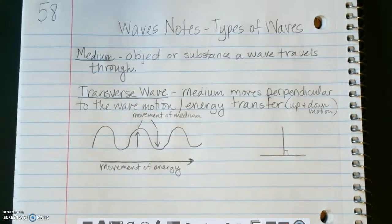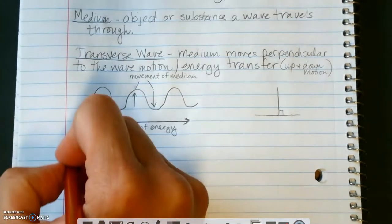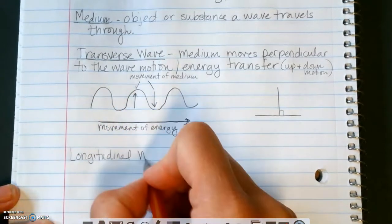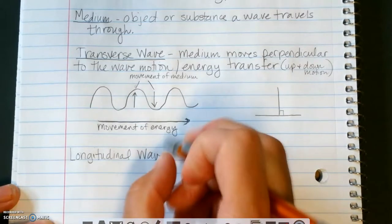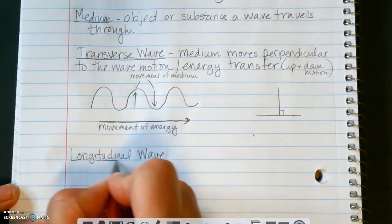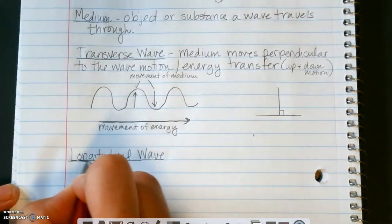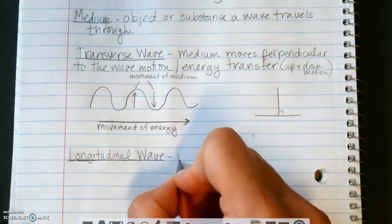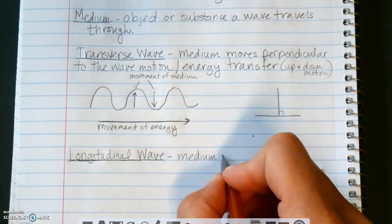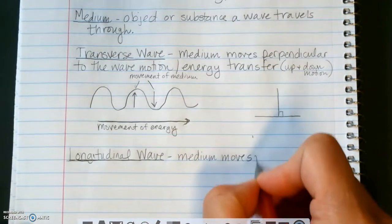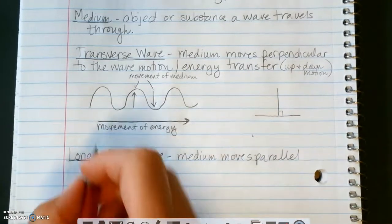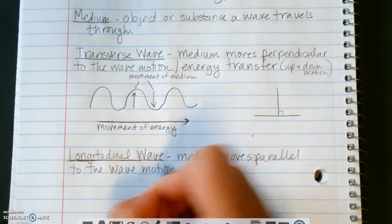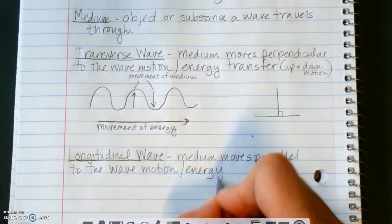The second one is called a longitudinal wave. So you did see this in the gizmo as well. So longitudinal wave. They use a slinky again to make the best version of a longitudinal wave. And that is where the medium moves parallel to the wave motion slash energy transfer.